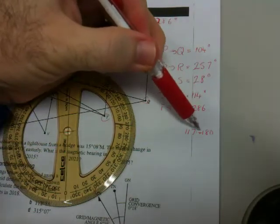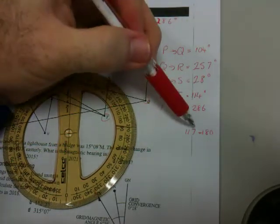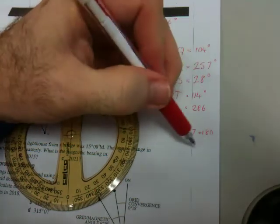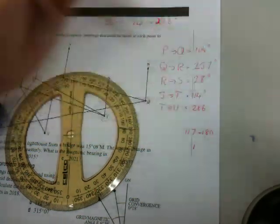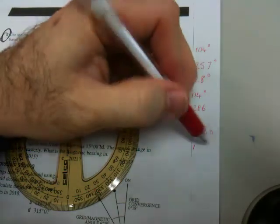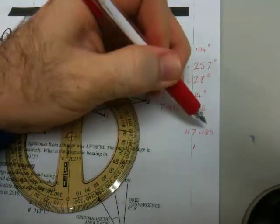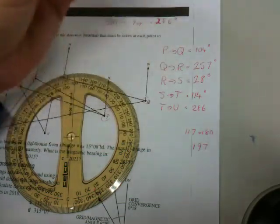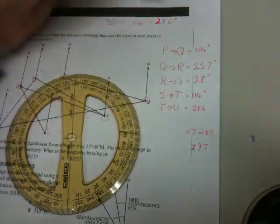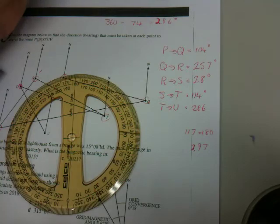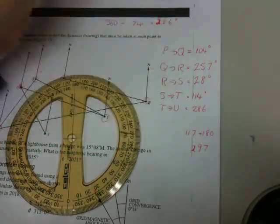If we have a look at this other one, 180 plus 117, that would actually give us... 297, sorry, 297. So 286, 297. I would have expected them to be maybe one degree out, but not 10 degrees.